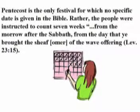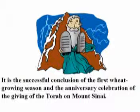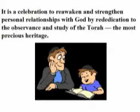Pentecost is the only festival for which no specific date is given in the Bible. Rather, the people were instructed to count seven weeks from the morrow of the Sabbath — from the day that the sheaf, or Omer, of the wave offering was brought, Leviticus 23:15. It is the successful conclusion of the first wheat growing season and the anniversary celebration of the giving of the Torah on Mount Sinai. It is a celebration to reawaken and strengthen personal relationships with God through rededication to the observance and study of the Torah, the most precious heritage.